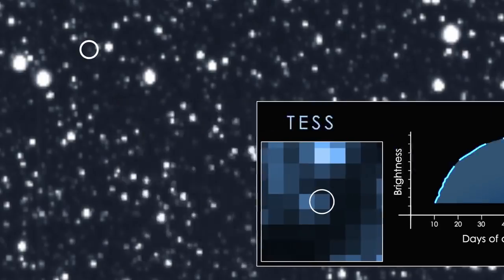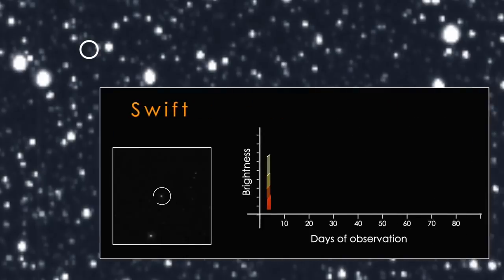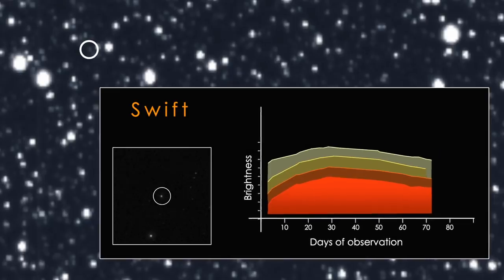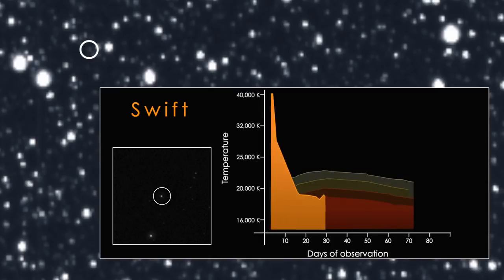NASA's Swift satellite quickly observed the outburst in visible light, UV, and along with the European XMM-Newton satellite, X-rays. The UV measurements are the earliest recorded for a tidal disruption to date. They showed the event's temperature dropped almost 50% in just a few days. Such a steep decrease has never been seen in a tidal disruption before.